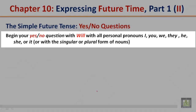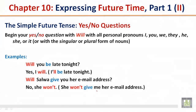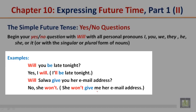The simple future tense: yes or no questions. Begin your yes or no question with 'will,' with all personal pronouns I, you, we, they, he, she, or it, or with the singular or plural form of nouns. Example: Will you be late tonight? Yes, I will — I'll be late tonight. Will Selva give you her email address? No, she won't — she won't give me her email address.